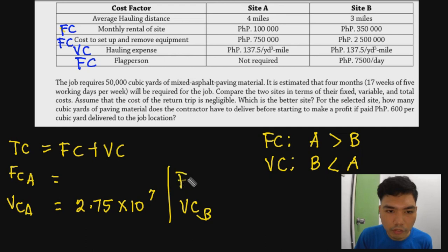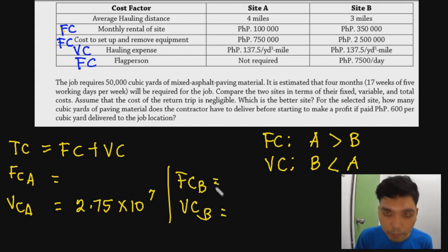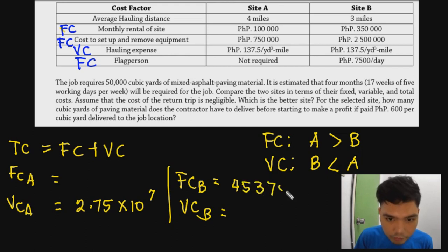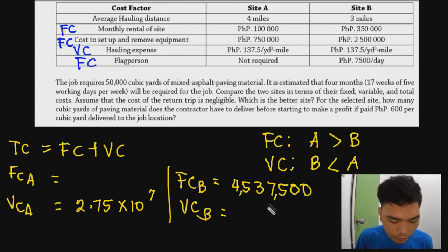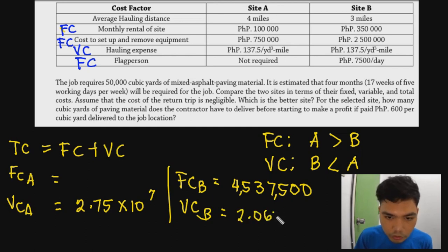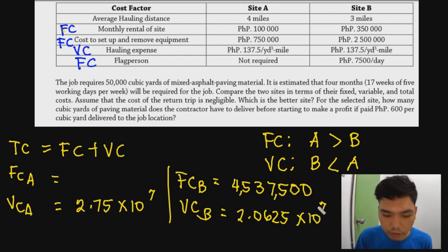Total cost for Site B: fixed cost of 4,537,500 plus variable cost of 20,625,000 equals 25,162,500 pesos. Comparing the two, Site B has a lower total cost than Site A, so the better option is Site B.